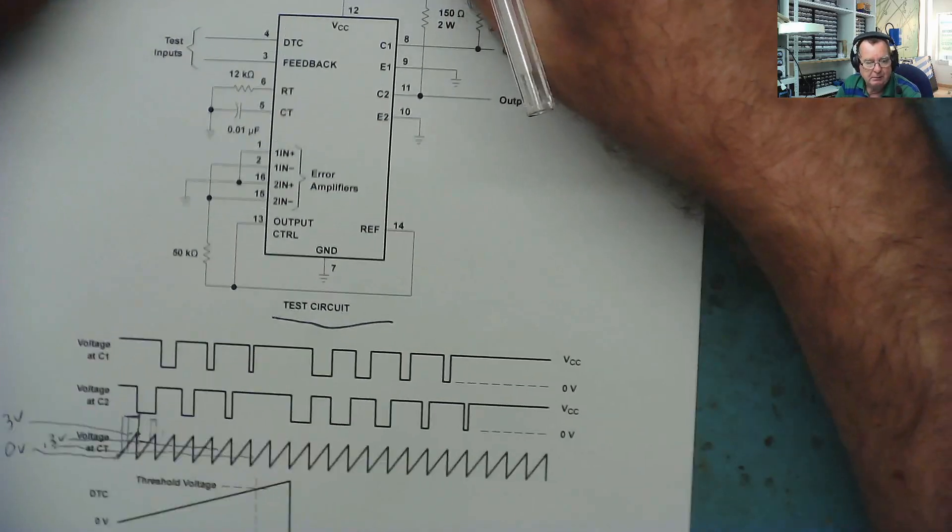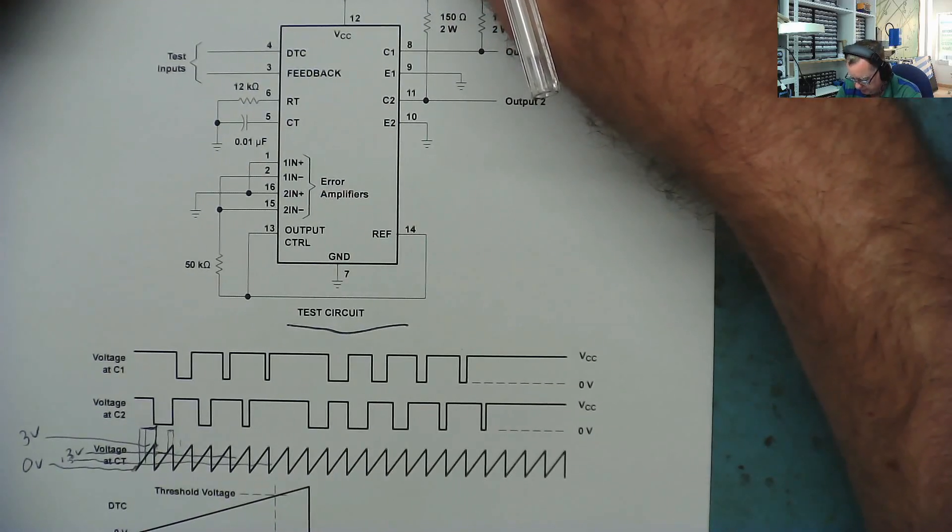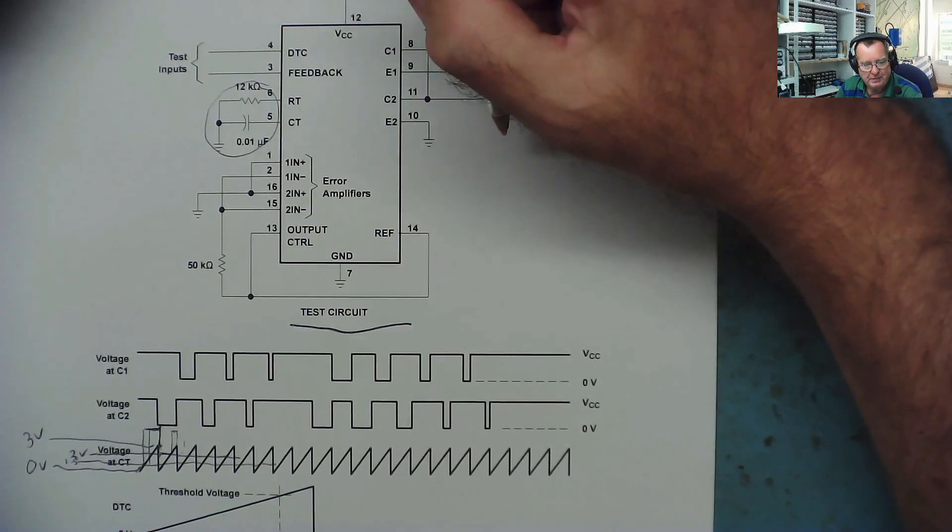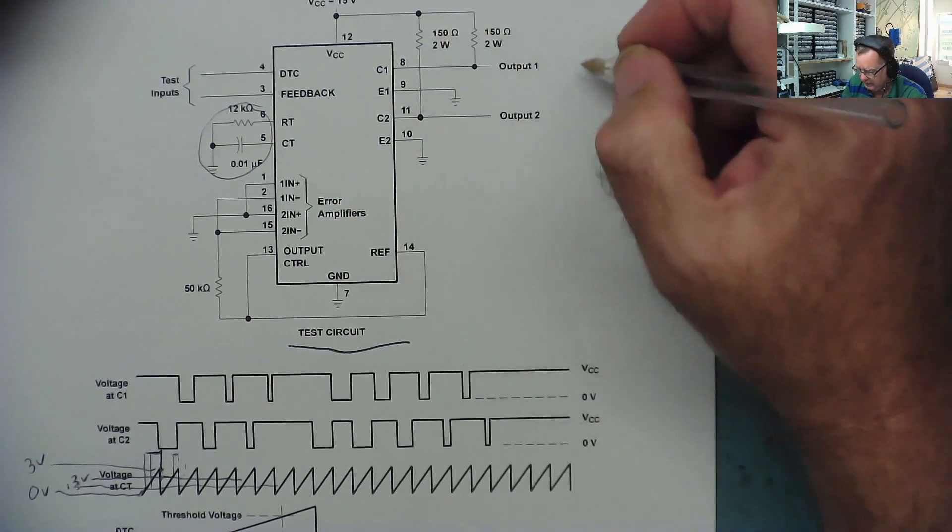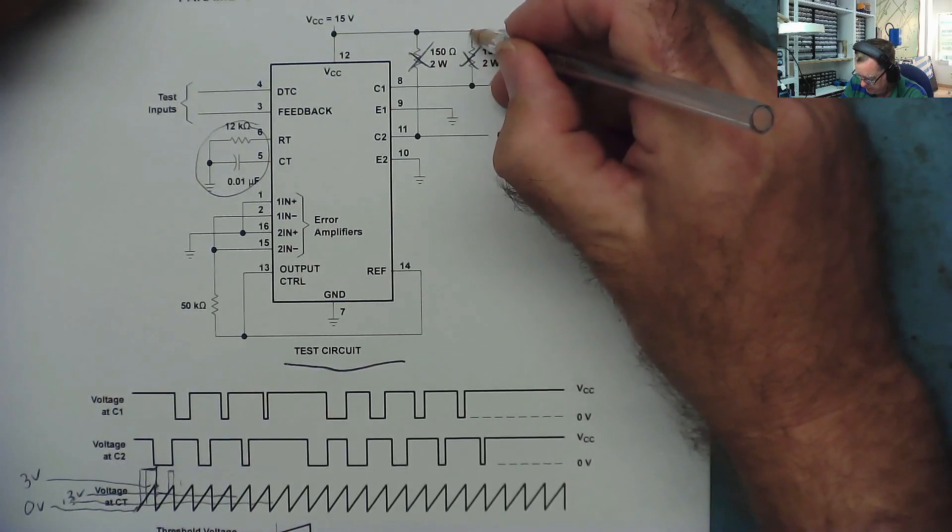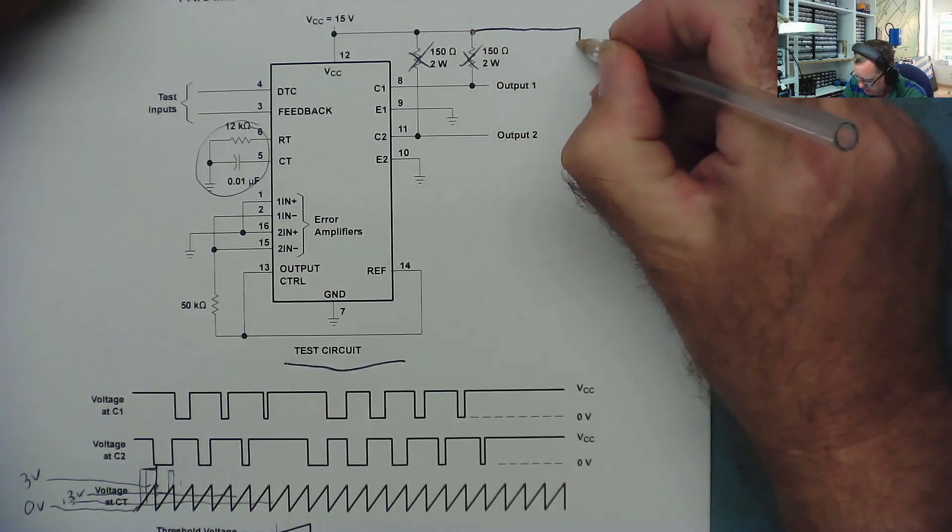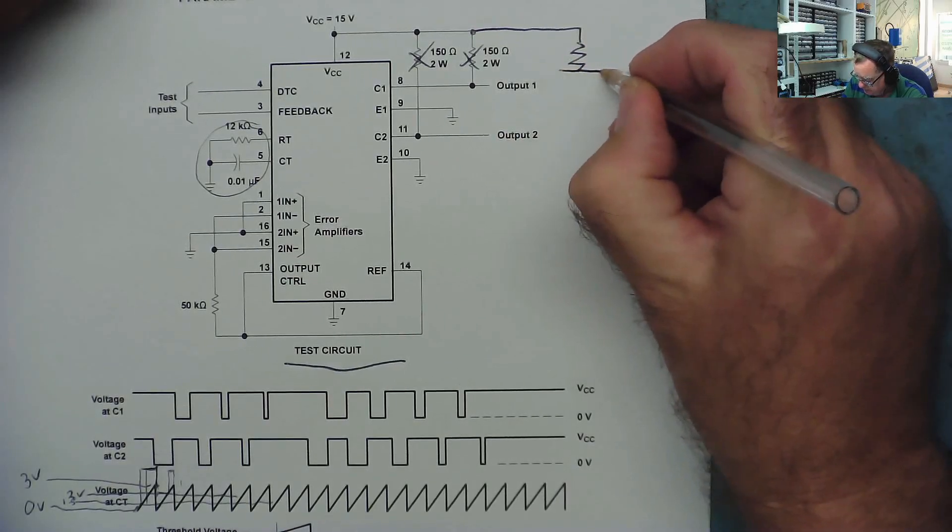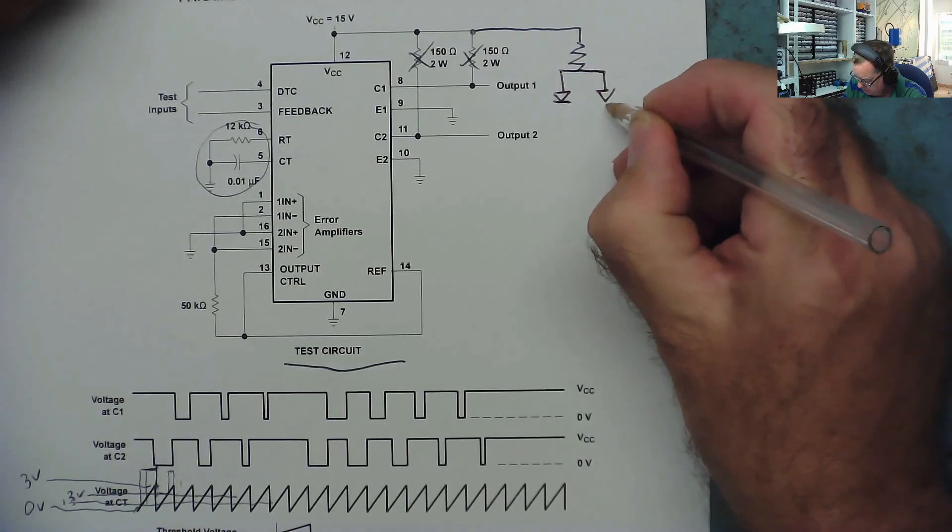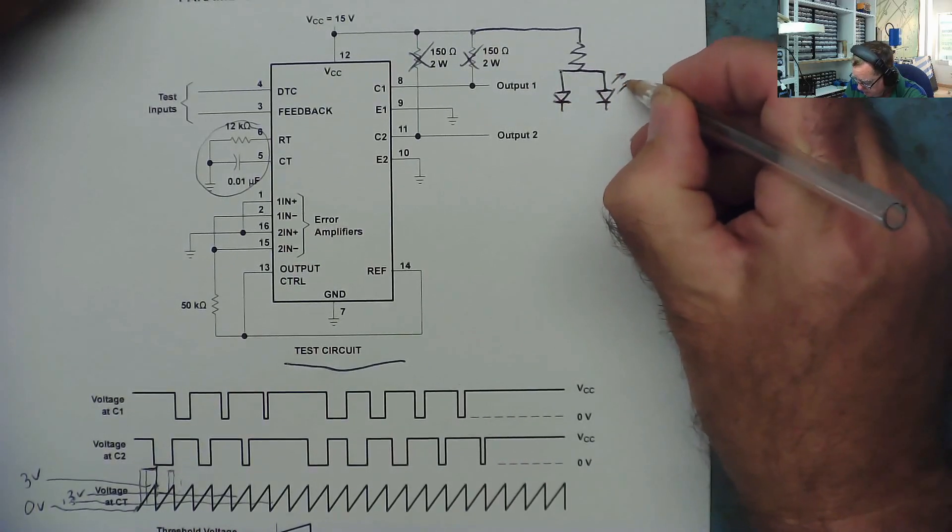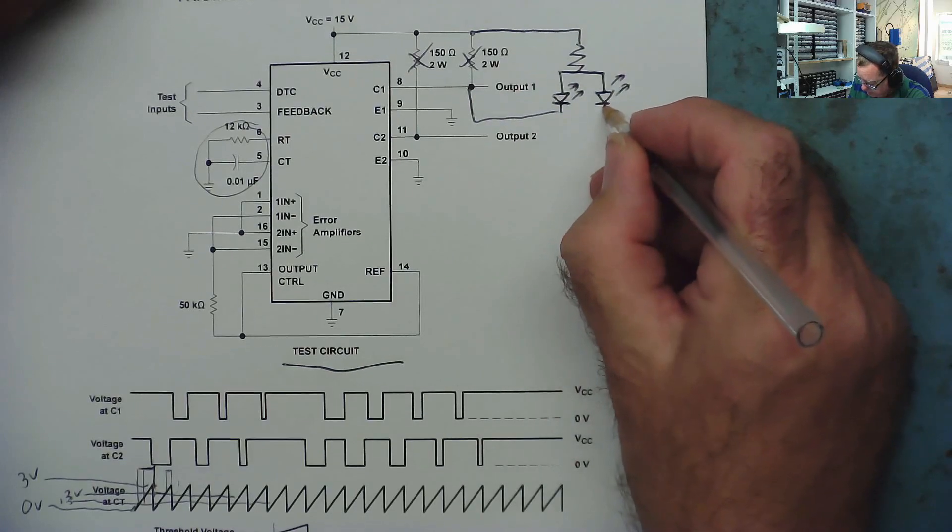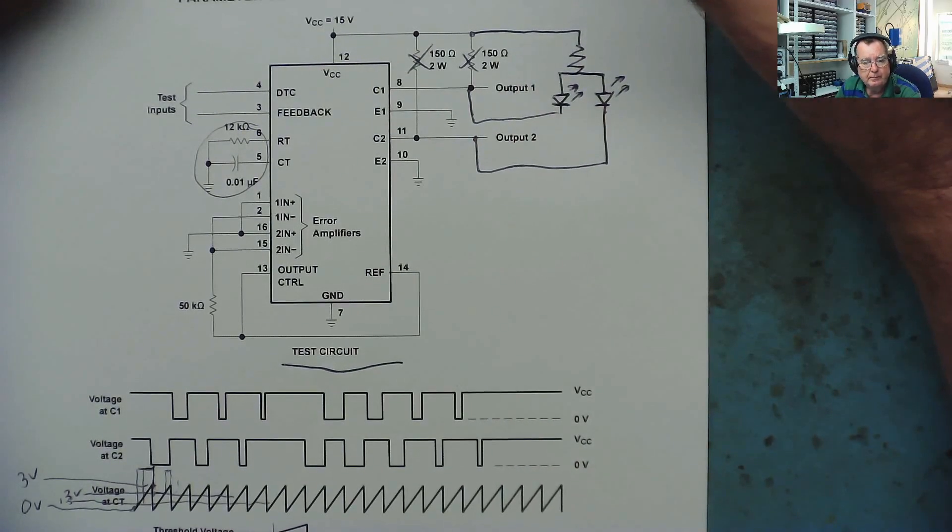So how can we make a tester? Well, all we really need to do is set the components here to a frequency that is slow enough for us to see what's happening. And on the output here, instead of driving transistors, we put some LEDs. So we can take these out and from here we connect a resistor, and from here we connect two LEDs, and then from each LED we connect to the outputs. That'll test it.